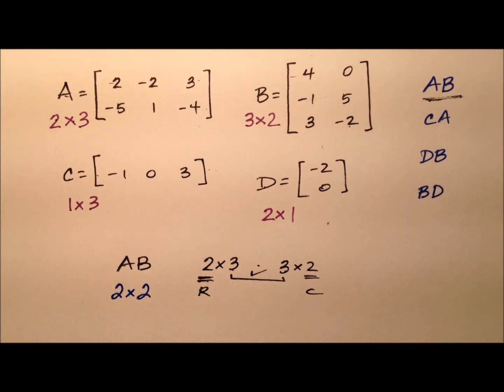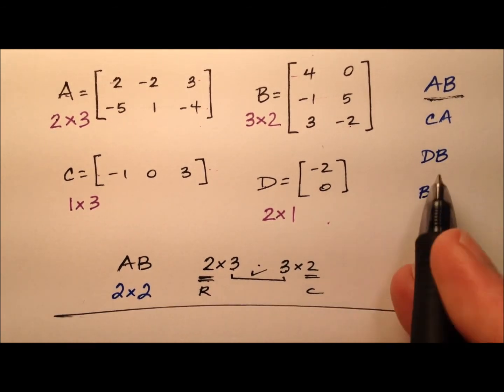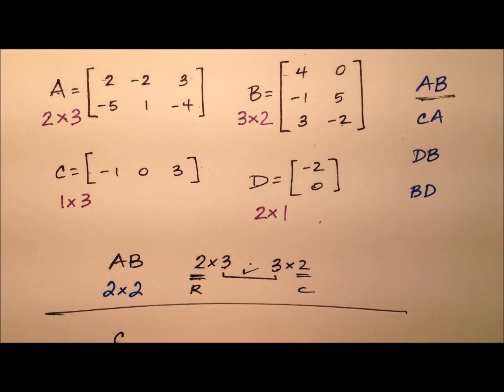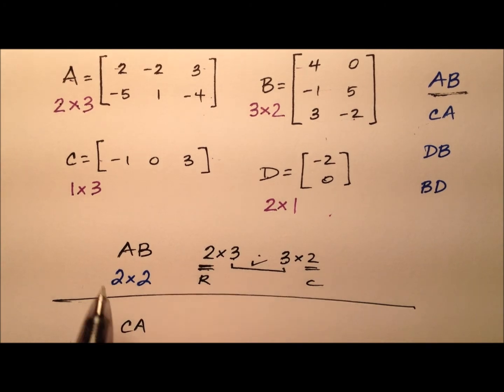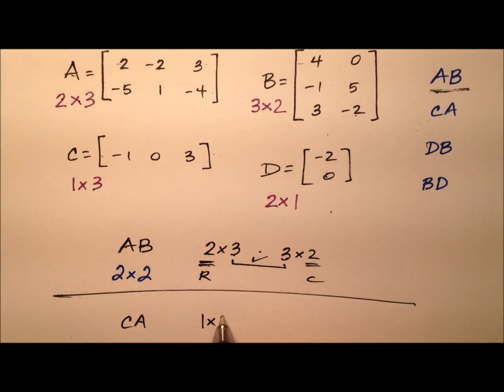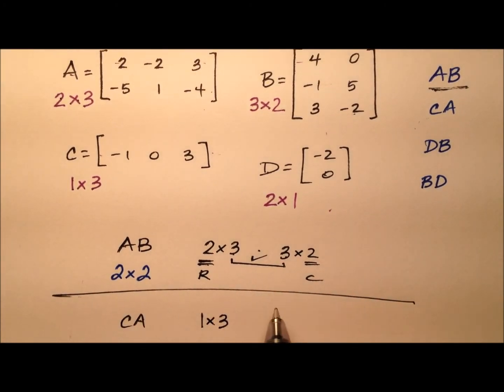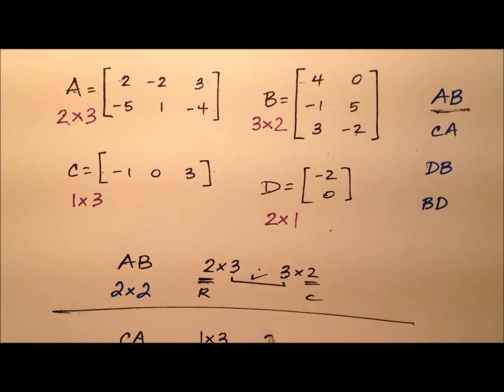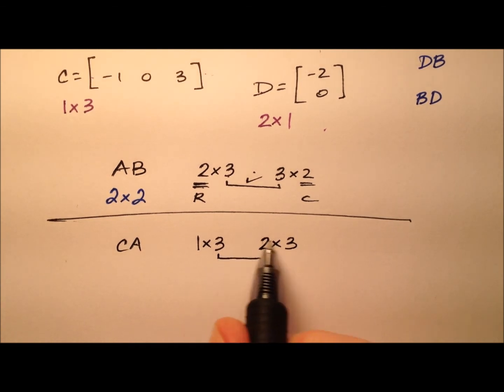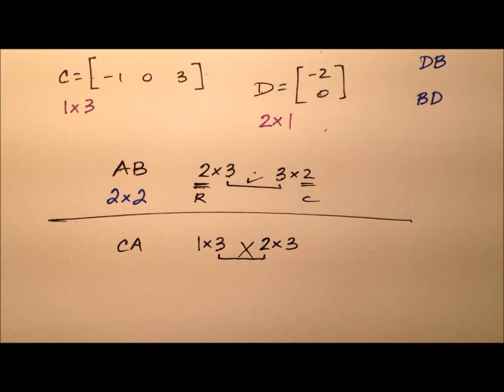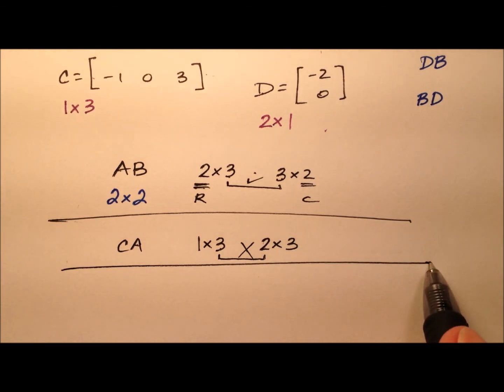Okay, so the next one is CA, and it looks like the dimensions of C were 1 by 3, and A was 2 by 3. And again, we're looking for this middle values here to be the same. 3 and 2 are not the same, so we actually cannot do this product of the matrix C with the matrix A. So this is a no-go.